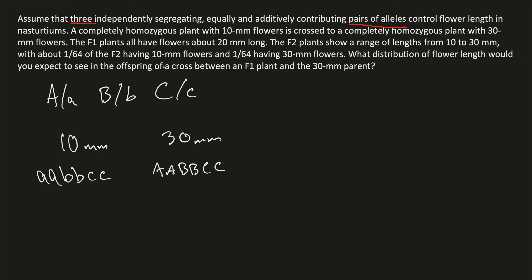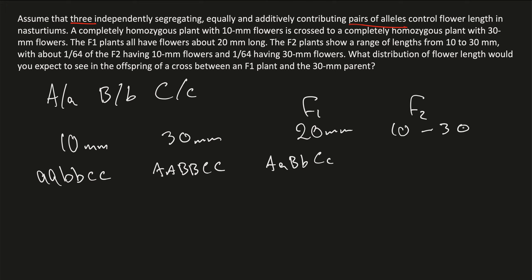The F1 plants all have flowers about 20mm long, which means they're heterozygous at all the alleles — big A little a, big B little b, big C little c — heterozygous at all the genes. The F2 plants show a range of lengths from 10 to 30mm. When we cross this F1 generation, we get an F2 generation that ranges from 10 to 30, which makes sense because we can get a range from totally homozygous for one to totally homozygous for the other, with heterozygous in between.